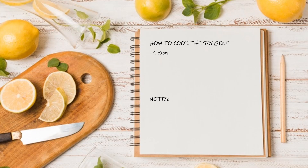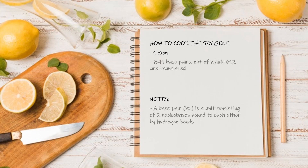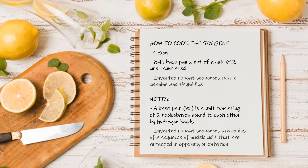The transcribed region has 841 base pairs, but the translated region consists of 612 base pairs, producing a protein of 204 amino acids. The SRY gene is flanked by two regions that contain inverted repeat sequences rich in adenine and thymidine. The region that codes for the HMG box is located at amino acids 57 to 137, more or less in the center of the gene.